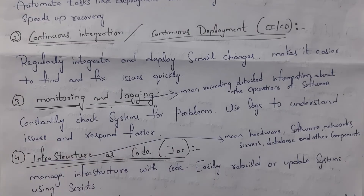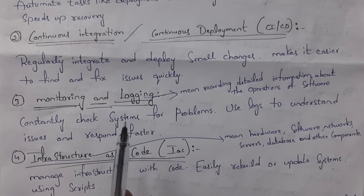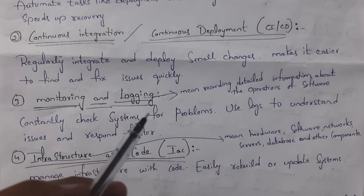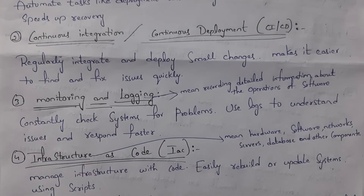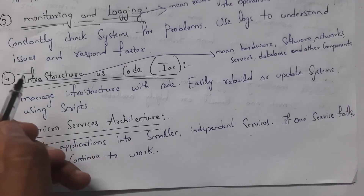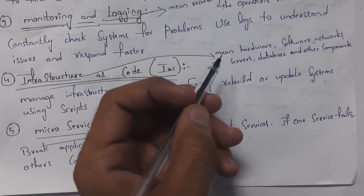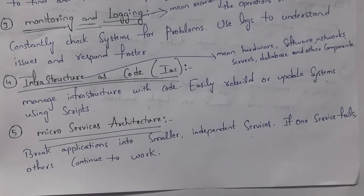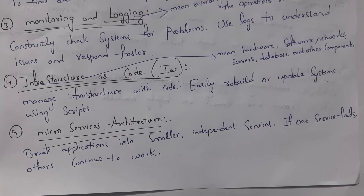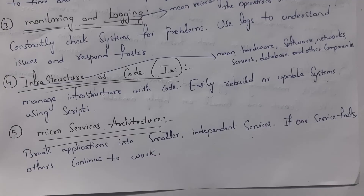Third is monitoring and logging. Logging means recording complete information about software — recording each and every operation. In DevOps, there are various tools available to continuously monitor particular software so problems can be constantly checked, issues easily identified, and problems solved. Fourth is infrastructure as code. Hardware, software, networks, servers, and databases all come under infrastructure. Whenever you develop any software, instead of manually setting up hardware, databases, and servers, DevOps uses automation tools to automatically configure hardware, software, servers, and databases.